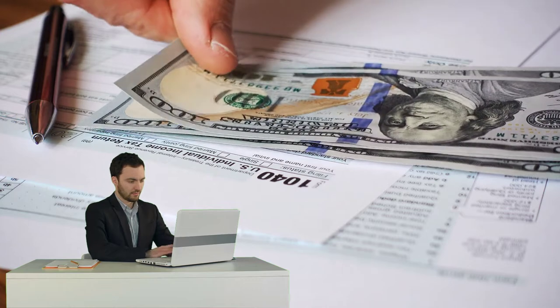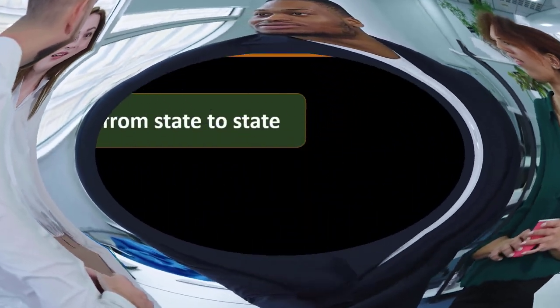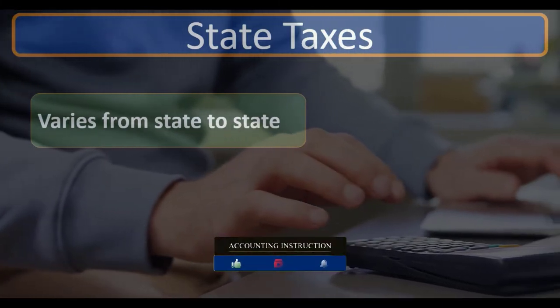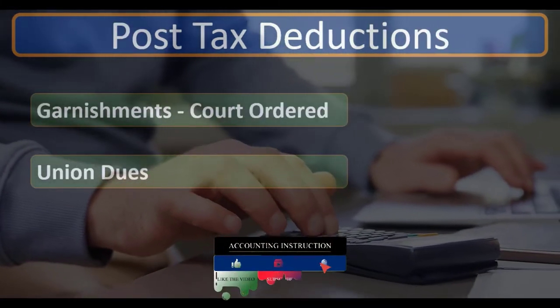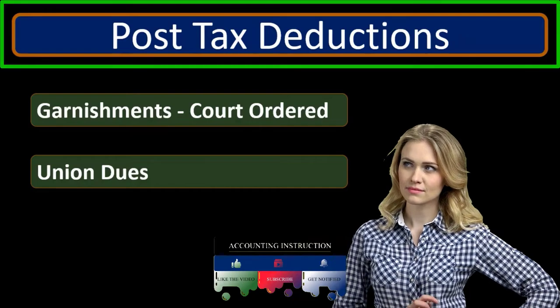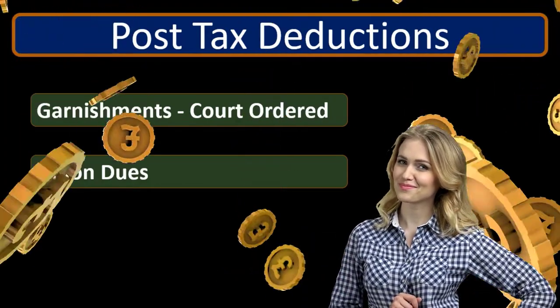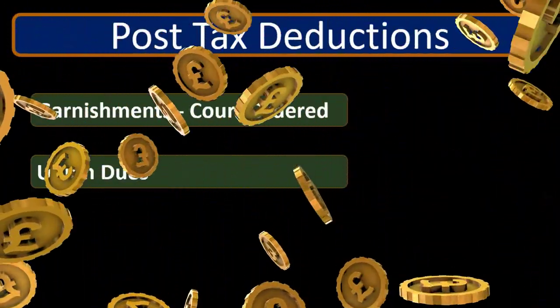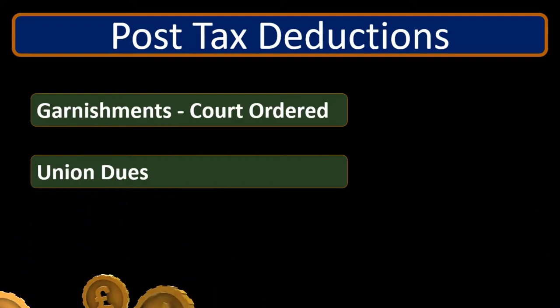Most states will follow the format of the federal taxes to some extent, or possibly have a more simplified method — a flatter tax being a more simplified method. Some states will follow a similar kind of progressive tax system, and therefore we'd have to use similar tables or calculations as we would use for calculating the federal income tax FIT withholding. We also have post-tax deductions — those are deductions that will happen after the tax has been calculated.